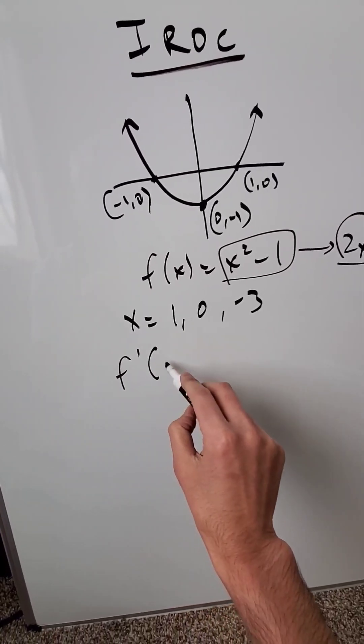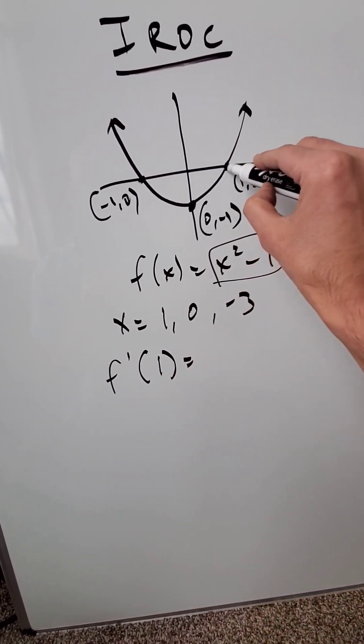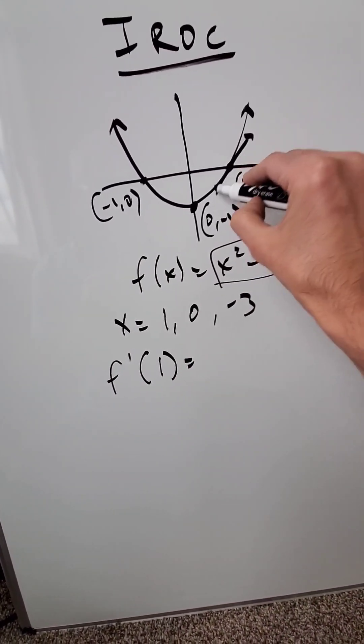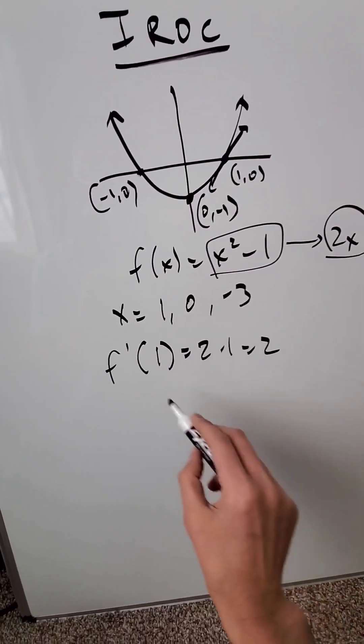f prime, which represents the derivative of your function, at a value 1. What's the slope of a tangent line right here? You just put it in your factor. 2 times 1, you're getting a slope of 2.